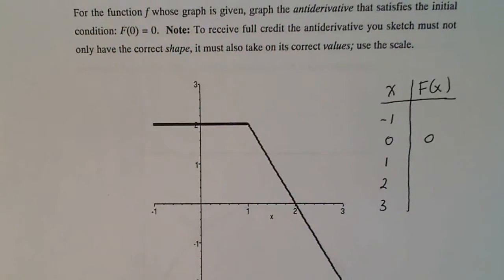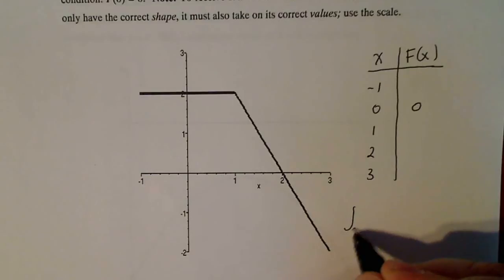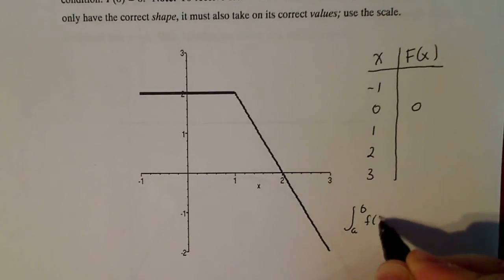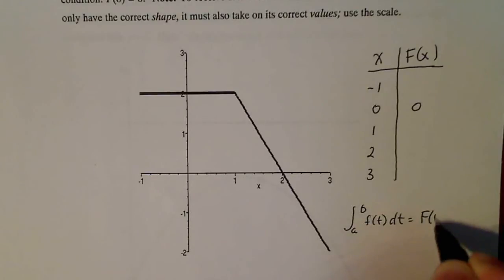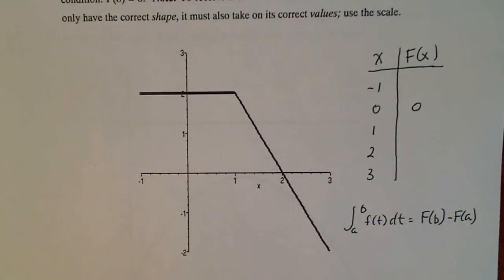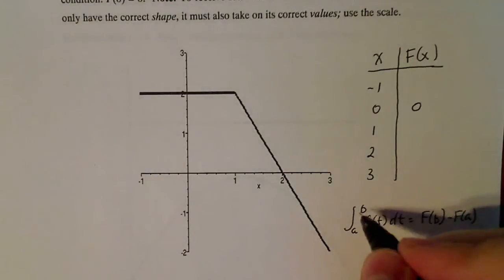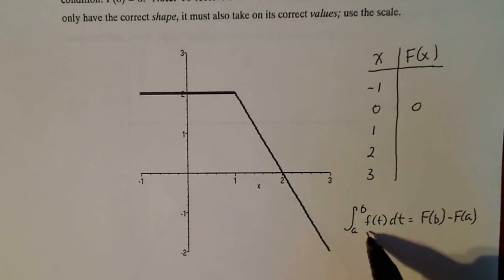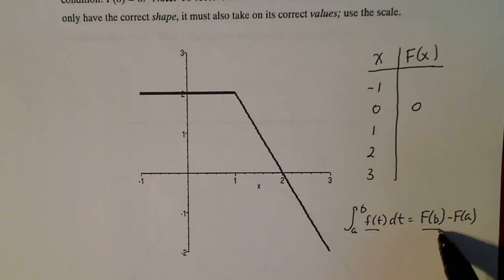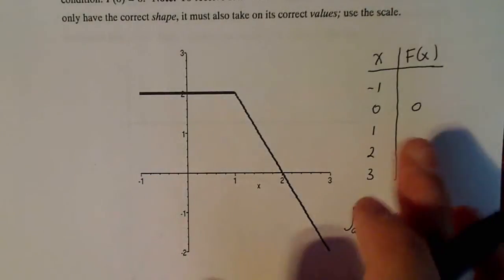All right, but the relationship that I have between a derivative and its antiderivative is the fundamental theorem. So the basic idea that the integral from a to b of f of t dt is equal to the antiderivative evaluated at b minus the antiderivative evaluated at a. That's the big relationship that I have between the derivative and the antiderivative. And so I'm going to utilize that to fill this chart in.